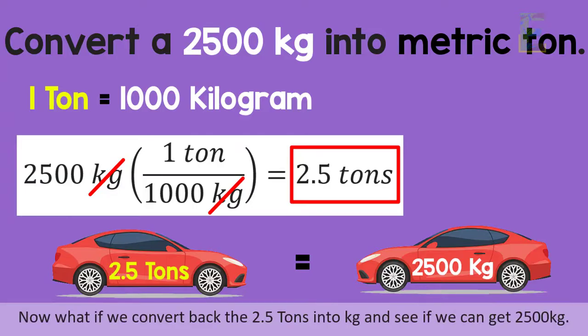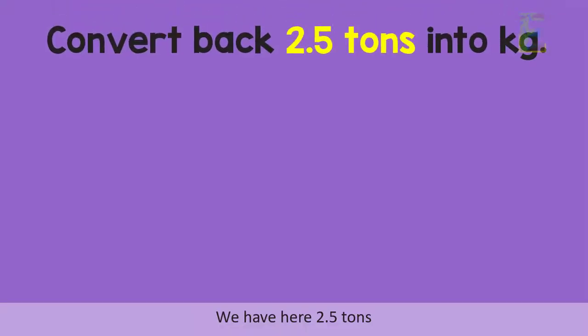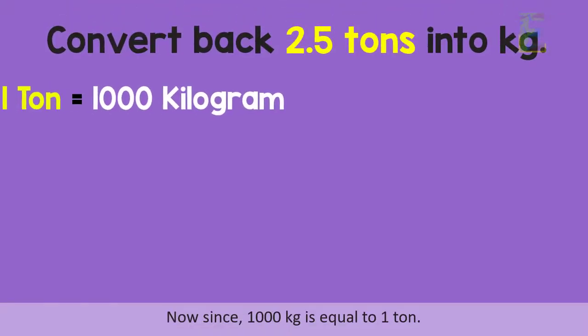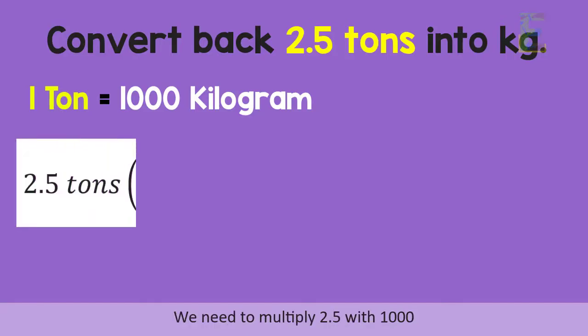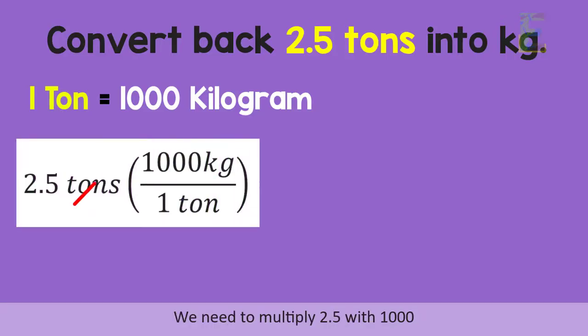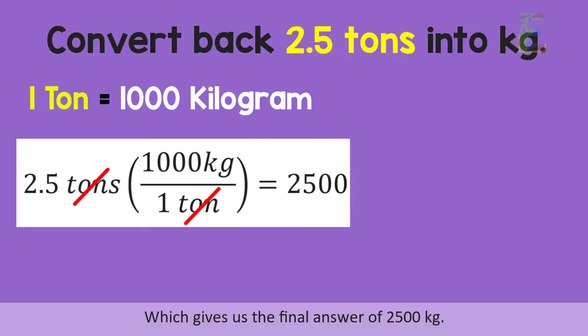Now, what if we convert back the 2.5 tons into kilogram and see if we can get 2,500 kilograms? We have here 2.5 tons. Since 1,000 kilograms is equal to 1 ton, we need to multiply 2.5 with 1,000, which gives us the final answer of 2,500 kilograms.